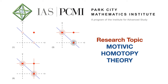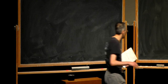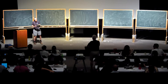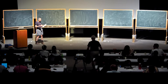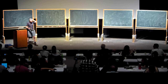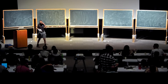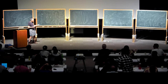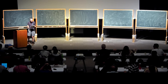It's a pleasure to have Bert Totaro giving his fourth and last talk on the Chow group of classifying spaces. Today I wanted to talk about whether the Chow groups of classifying spaces are finitely generated abelian groups or not. And the answer is that, in a sense, in general, they're not.